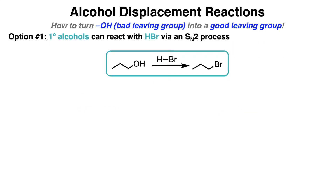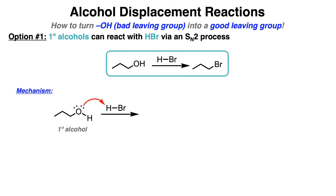The first alcohol displacement reaction uses HBr. In this example, a primary alcohol reacts with HBr to form a primary alkyl bromide. The mechanism starts with one of the lone pairs of O grabbing the hydrogen in HBr, and the HBr bond breaking to form a new lone pair on bromine. Then Br⁻ attacks the alpha carbon, and water, which is now a good leaving group, breaks off to form your product.